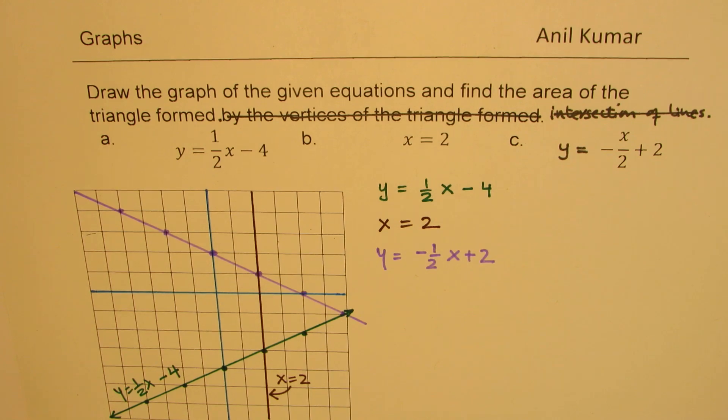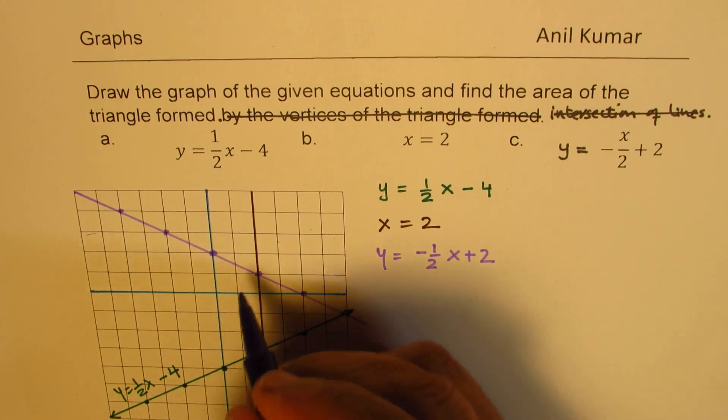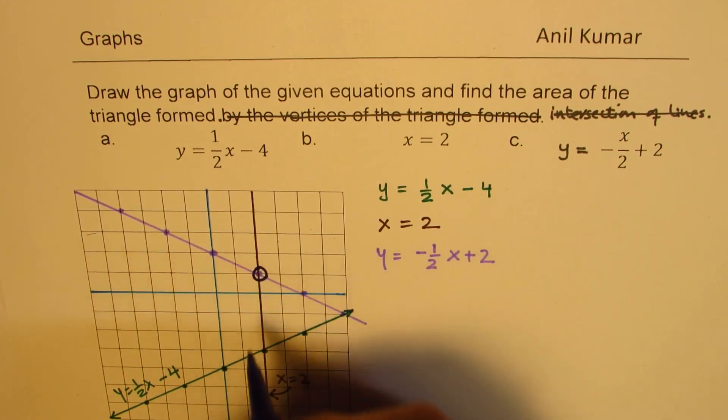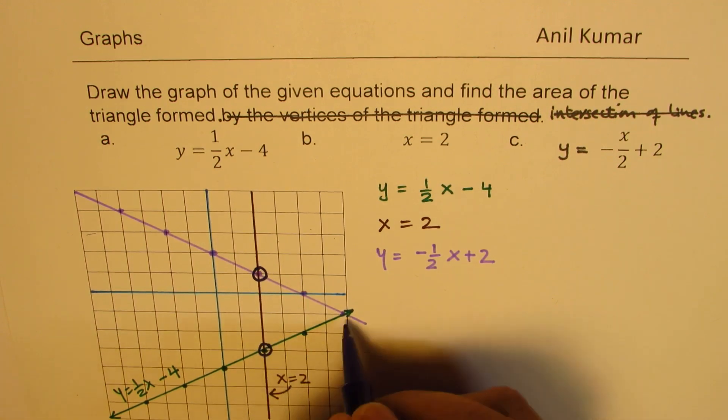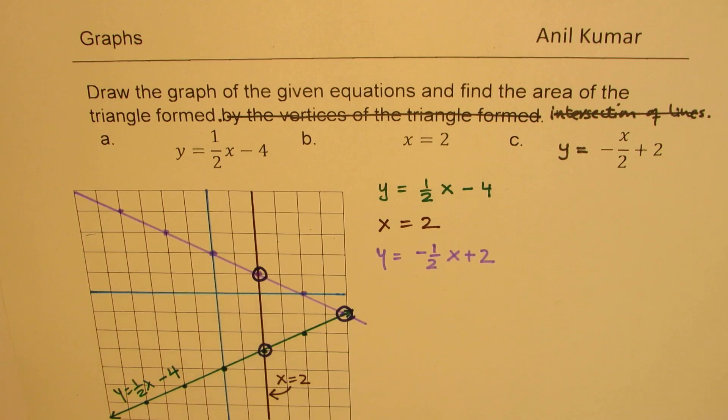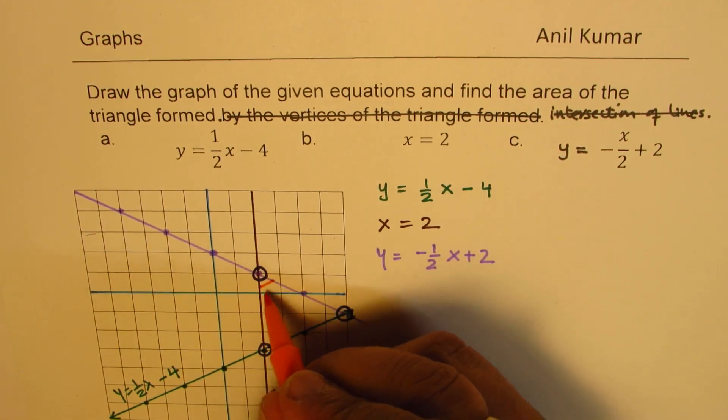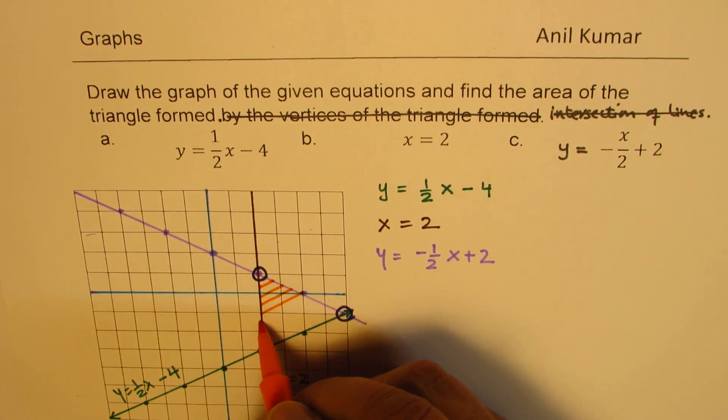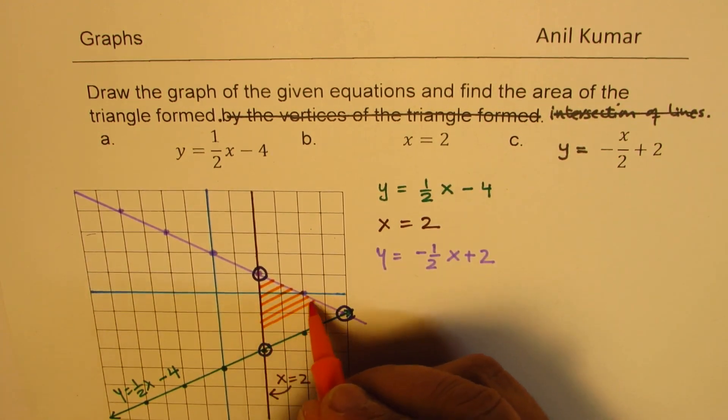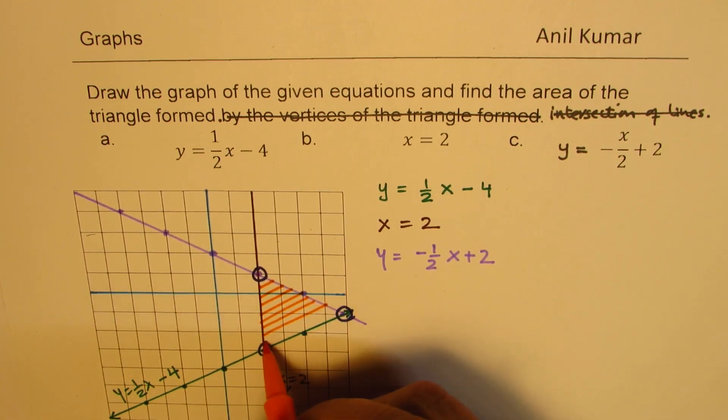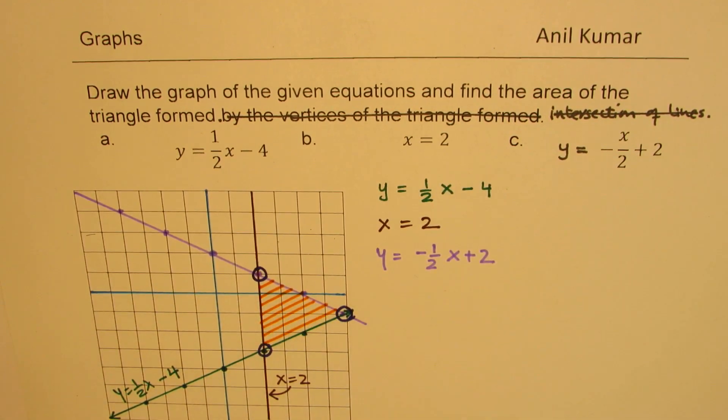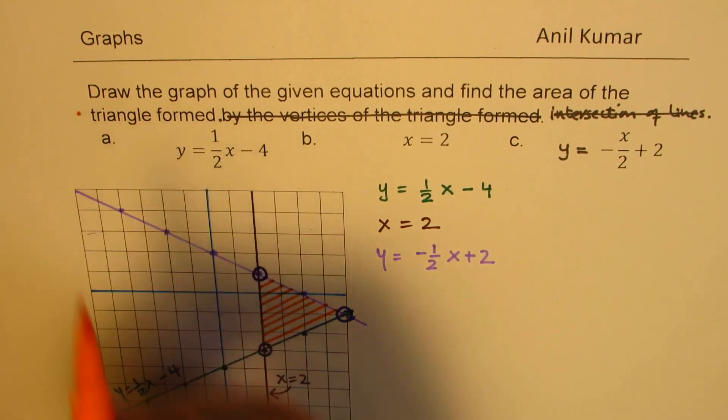So as you can see here clearly, we got these points as the points of intersections. Now, these points enclose a triangle. So the idea here is also to find the area of this triangle, which is formed by these three lines' intersections. So that is our second part, area of the triangle.